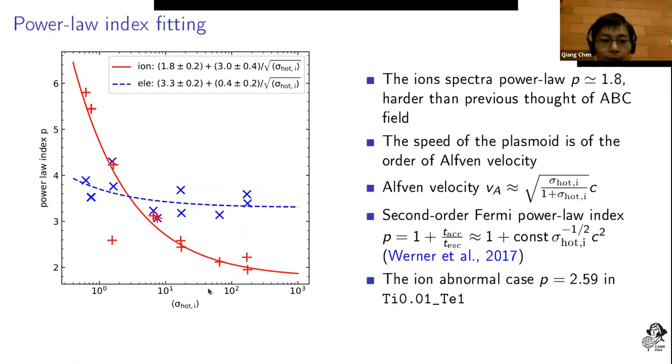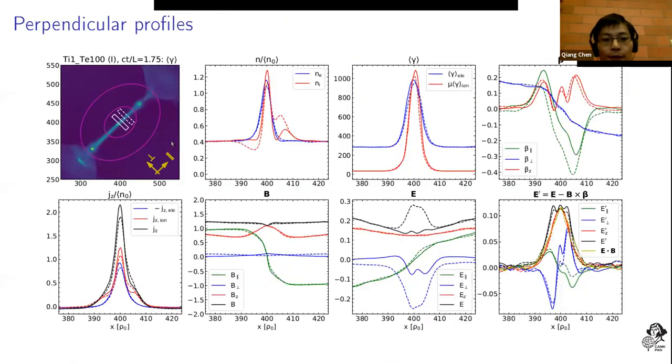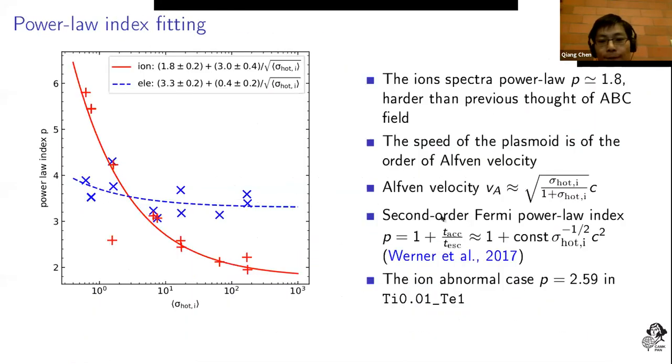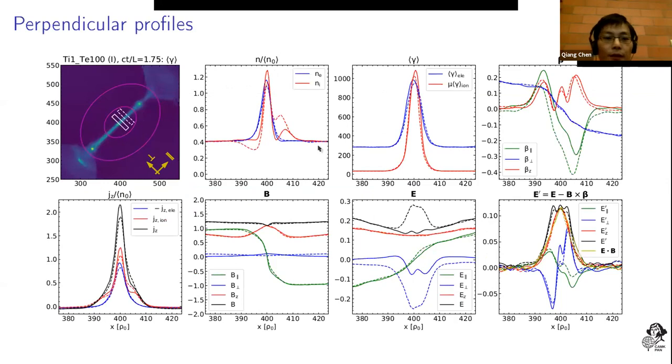You perhaps notice that we use the sigma ion to find a correlation between them. The reason is that sigma ion is related to the second-order Fermi process with the exponent of minus one over two, so we kind of confirm this theory.